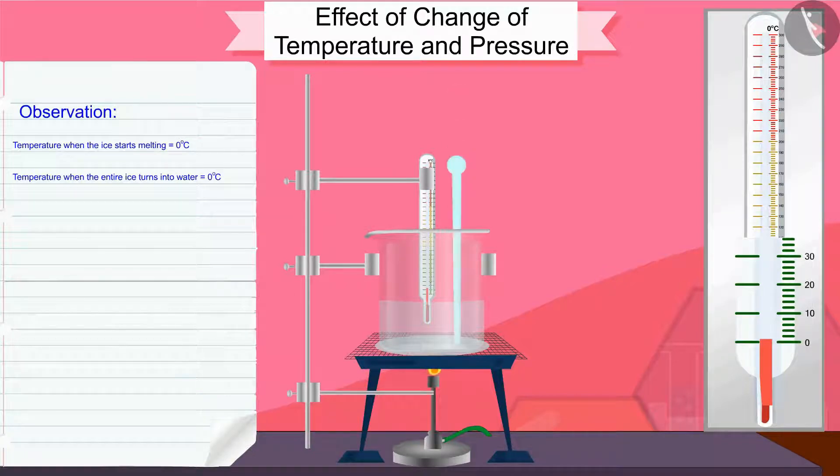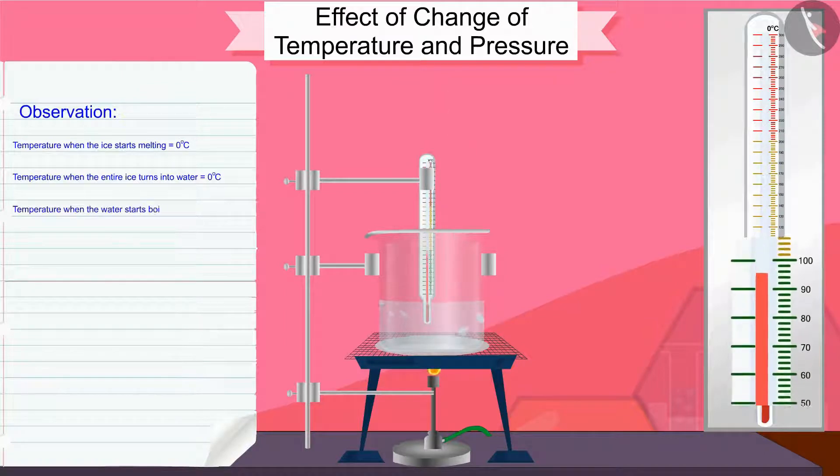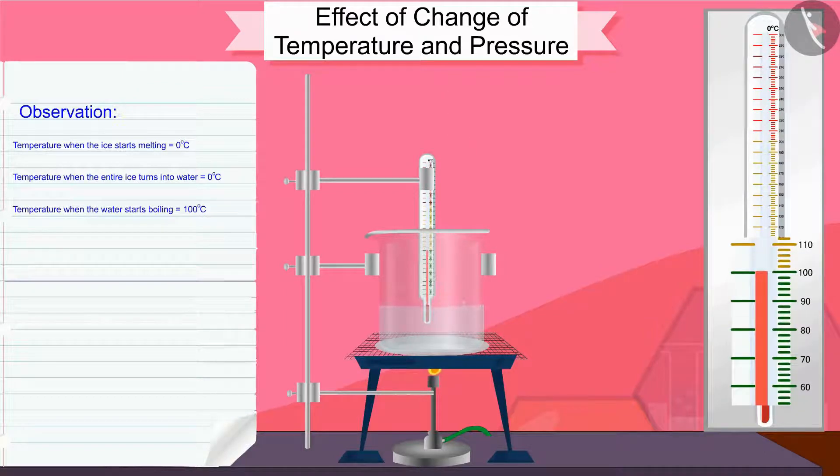Now, put the glass rod in the beaker and heat it by stirring till the water starts boiling. Keep an eye on the measurement of the thermometer until most of the water vapor is formed. Note down the observation in the change from the liquid state to gaseous state of water.